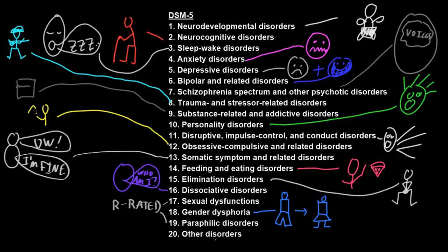The last category is just called other disorders. The entire purpose of this category is for any person that appears to have a mental disorder causing distress or disability, but one that doesn't fit well in any of these other categories. The vast majority of people with a mental disorder will fit in one of these big categories, but very rarely a person just won't fit but does clearly have a mental disorder — and that's what this other disorders category is for.